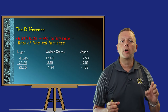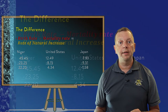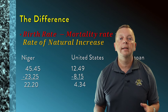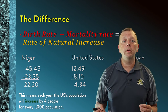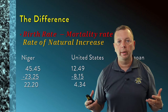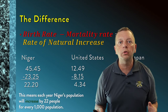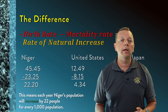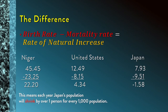If we take our birth rate and subtract the mortality rate, we get something called the rate of natural increase. For example, taking the birth rate of the United States and subtracting the mortality rate gives a rate of natural increase of 4.34. In poor countries, even with a high mortality rate, the high birth rate produces a much larger rate of natural increase — Niger has a rate of natural increase of 22.2. In contrast, Japan actually has more people dying than being born, meaning Japan has a shrinking population of negative 1.58.